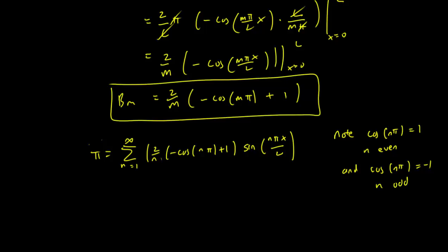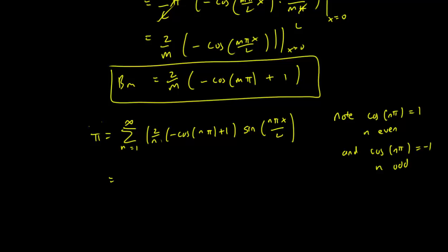This means that if n is even, we just get minus 1 plus 1 here and this entire term disappears. When n is odd, this is just a 2. So we can ignore all the cases when n is even. So we can say we're just summing the case from n equals 1 to infinity with n odd. And when n odd, this is a 2 and the sign remains. And when n is even, the term disappears.